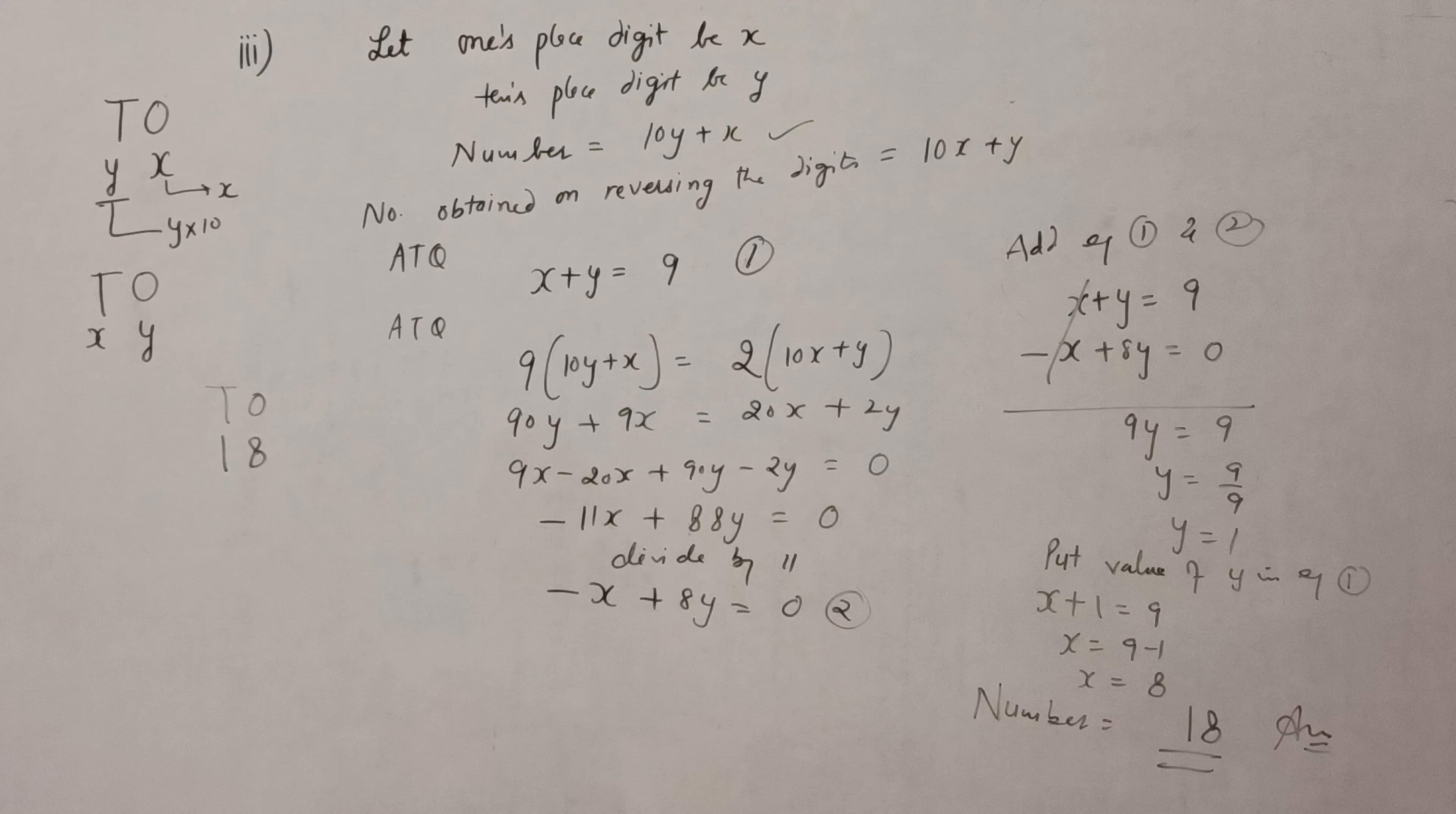So x plus y equals 9, minus x plus 8y equals 0. This will be 9y equals 9, y equals 9 by 9, that is 1.